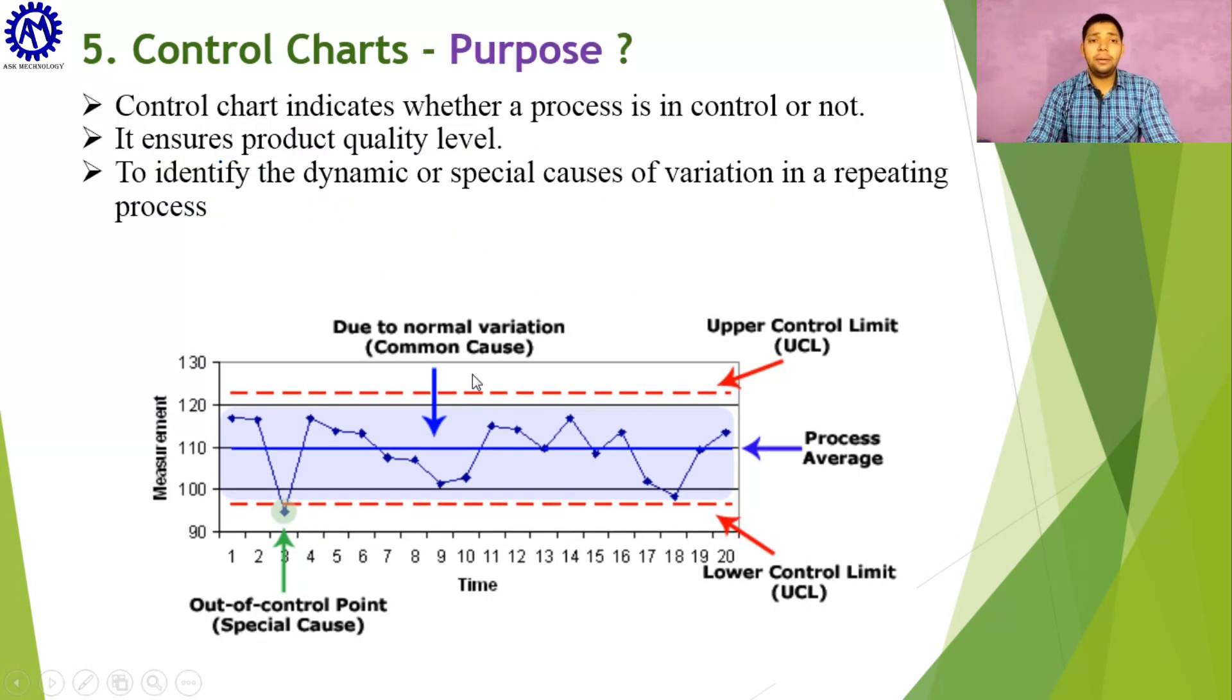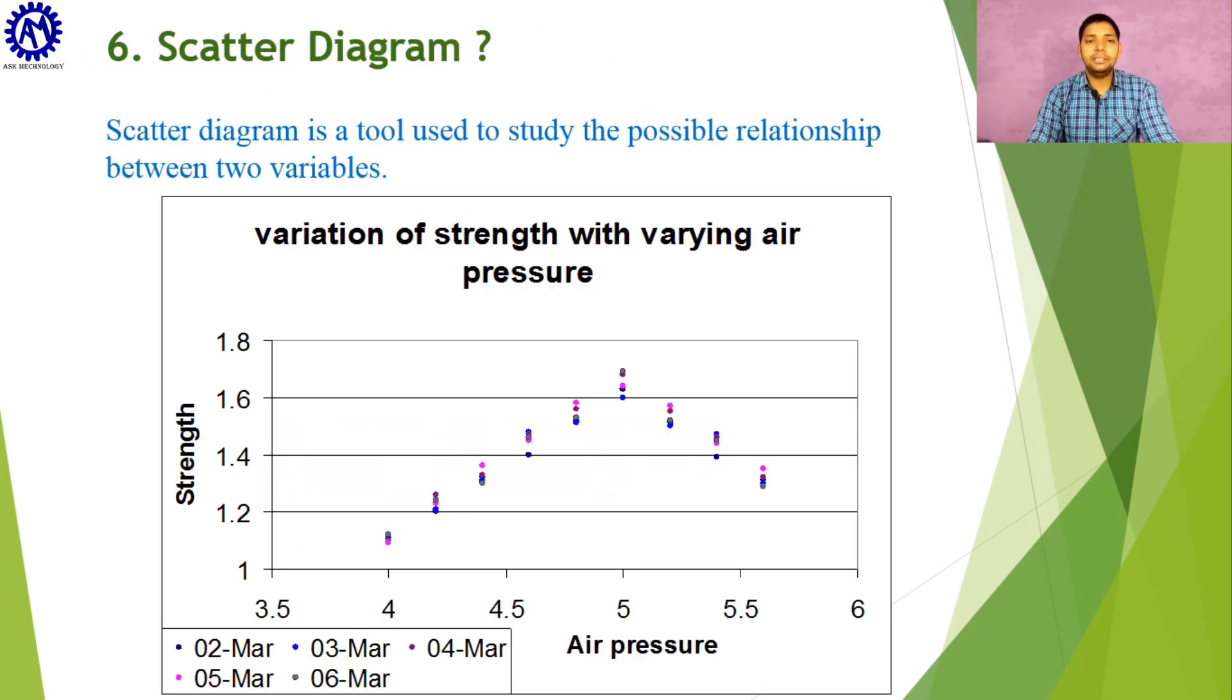The purpose of control chart is to indicate whether a process is in control or not and ensure the quality level of our product. It also helps to identify the dynamic or special causes of variation.